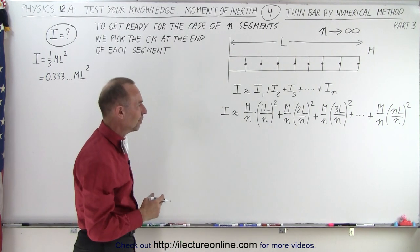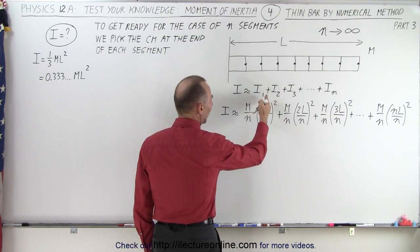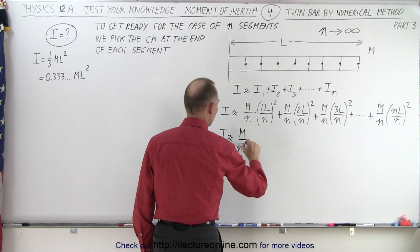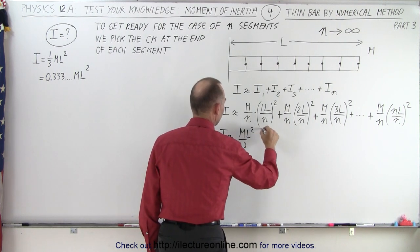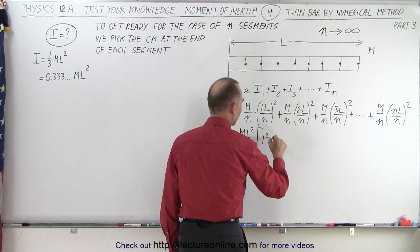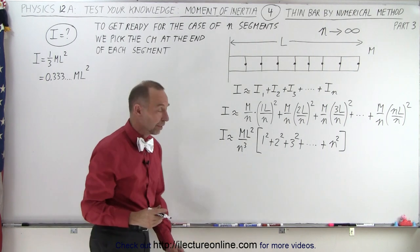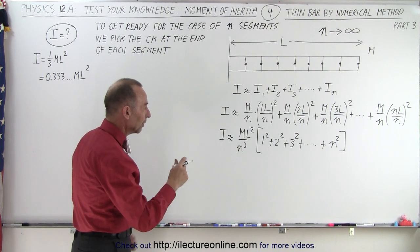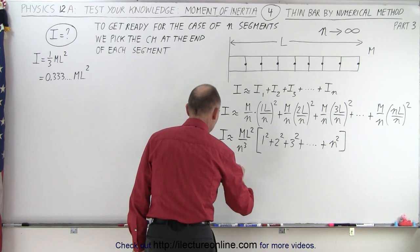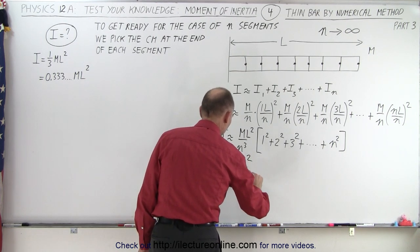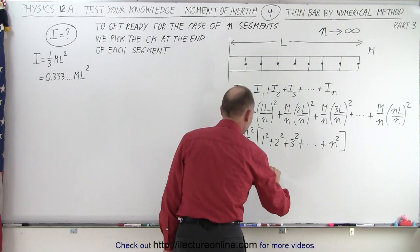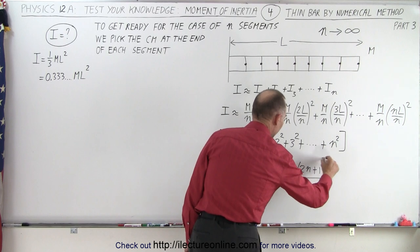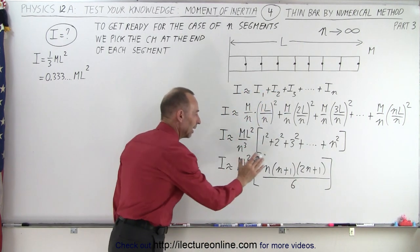Now how do we generalize that format? We can factor out an m over n, we can factor 1 over n², and an L². So we have I approximately equal to mL² over n³ times the quantity in brackets: 1² + 2² + ... It turns out the quantity inside the brackets can be written as n times (n+1) times (2n+1) all divided by 6. So I is approximately equal to mL² over n³ times n(n+1)(2n+1)/6.